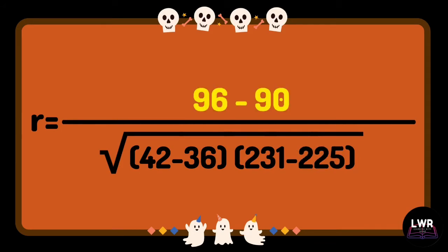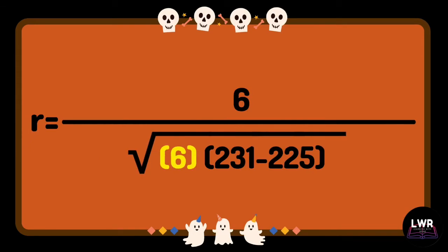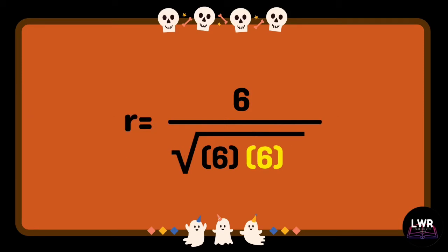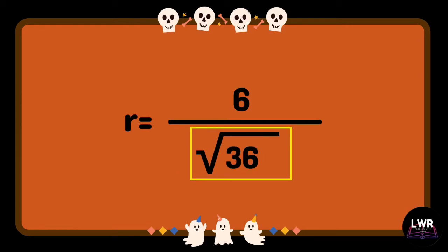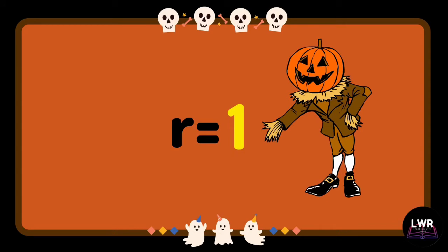96 minus 90 is equal to 6. 42 minus 36 is equal to 6. 231 minus 225 is equal to 6. 6 times 6 equals 36. And the square root of 36 is equal to 6. So, 6 over 6 is equivalent to 1, which is the final answer.